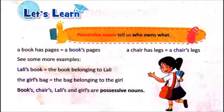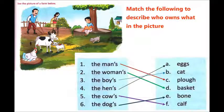Now with this activity it will be very much clearer to you. This is a farm scene and what are they asking you? Some words are given and you have to match them — who owns what.